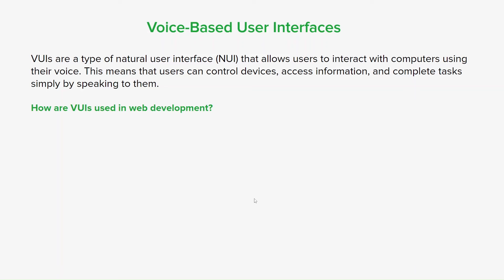VUIs are being used in development in a variety of ways. The main one is hands-free navigation — VUIs allow users to interact with websites and applications without using their hands, useful in situations where hands are occupied. For example, users can search for items, add items to a shopping cart, or control music playback. VUIs also make websites more accessible to users with disabilities — for example, users with visual impairments can use voice commands to navigate websites and hear content read aloud.